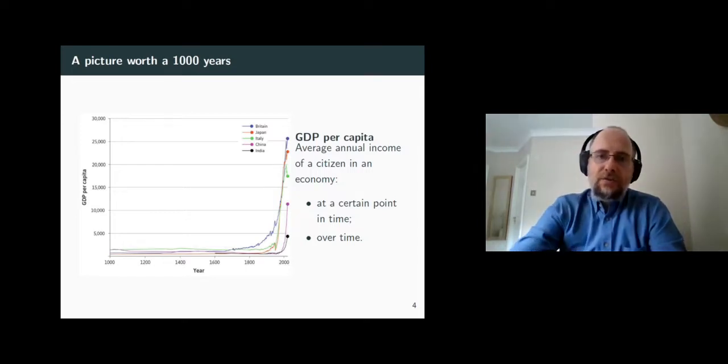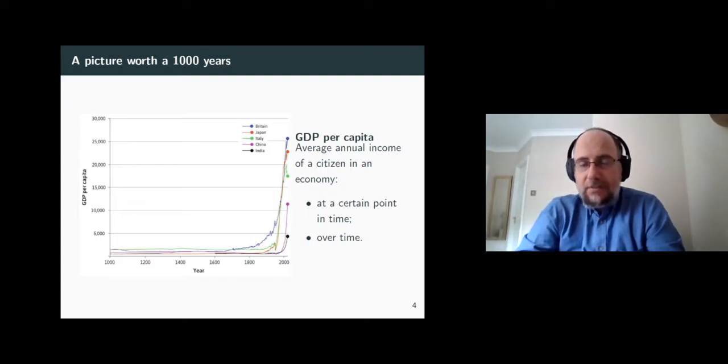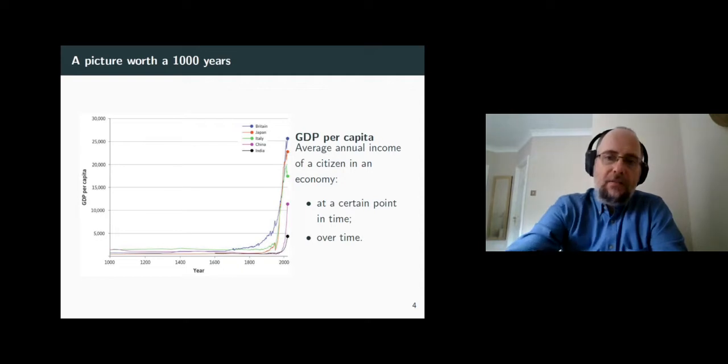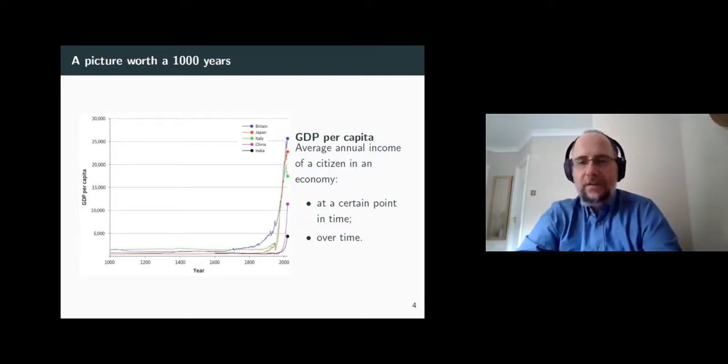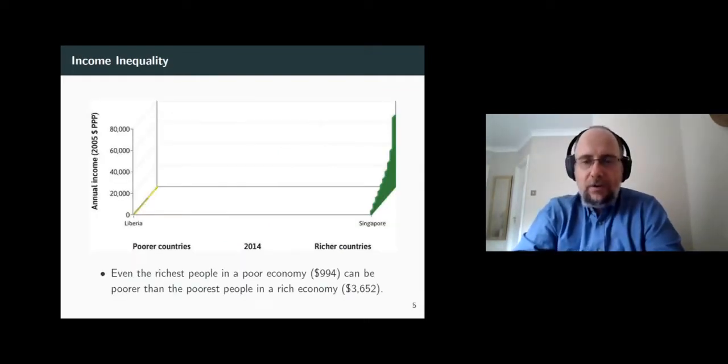So comparing average values of income across countries and over time is sometimes not very useful. This is because, as you will see in your statistics course this term, an average value fails to reveal so much information. Therefore, we, the economists, sometimes also work with much more than the averages. We work with the entire distribution of a certain variable. Take, for example, the entire distribution of income across countries at a certain point in time. Have a look at the following figure.